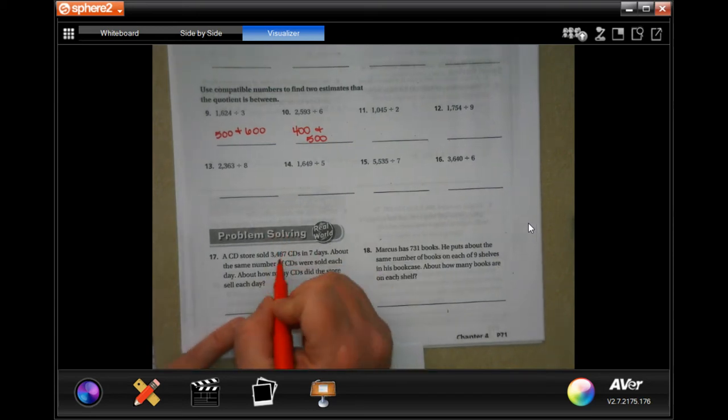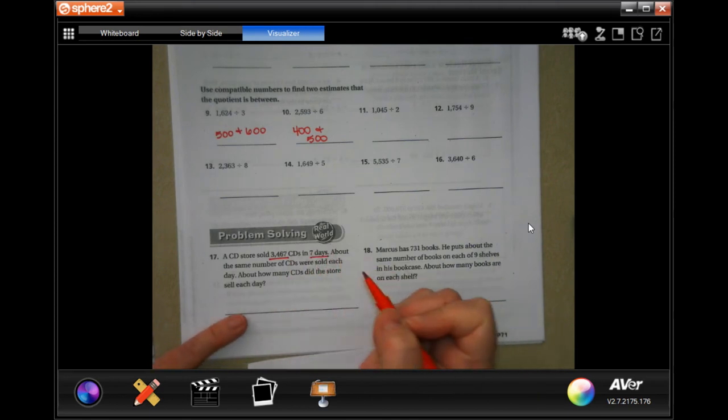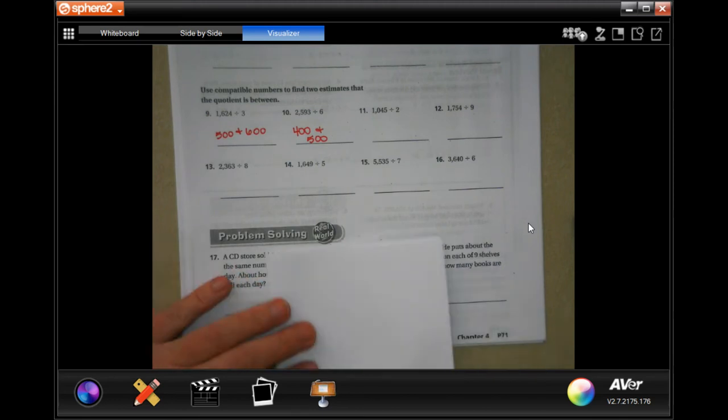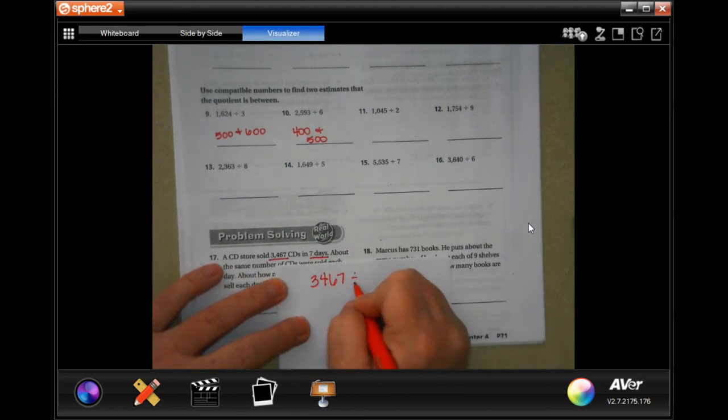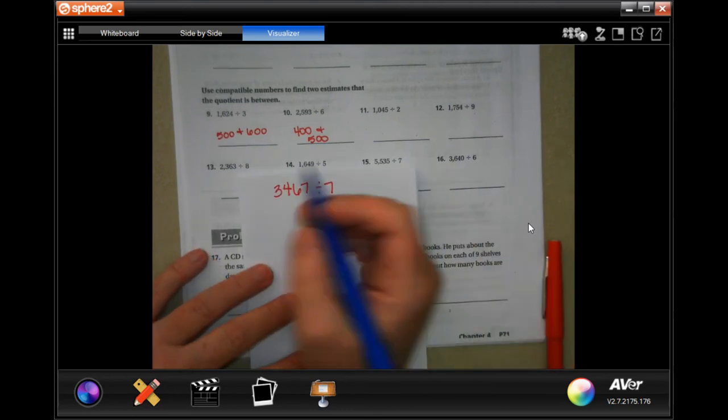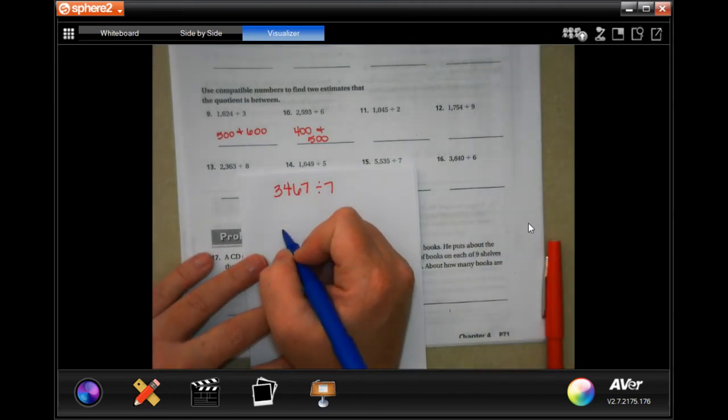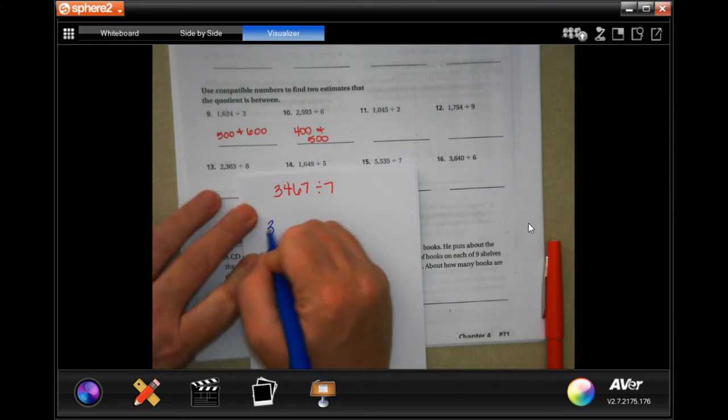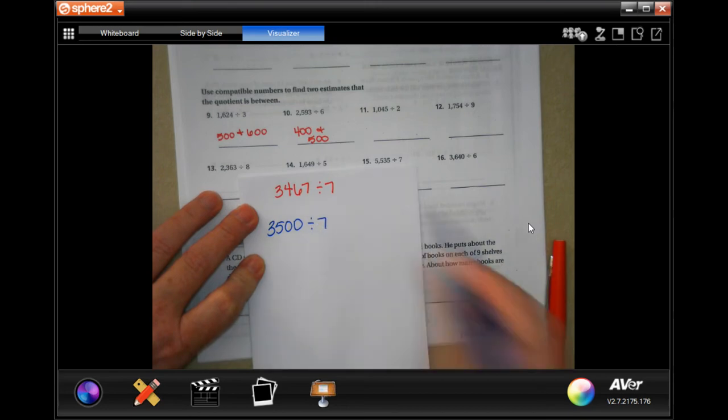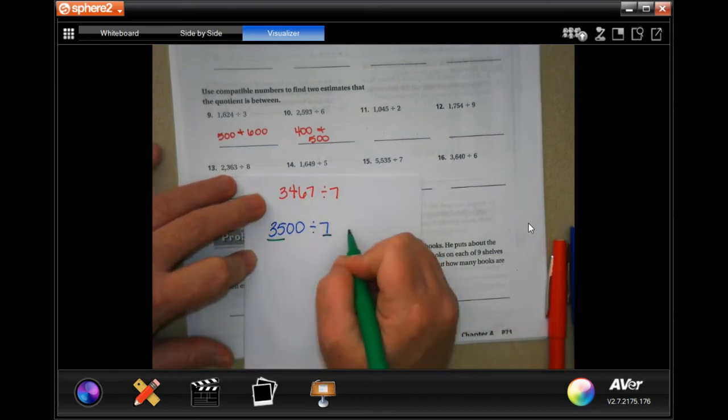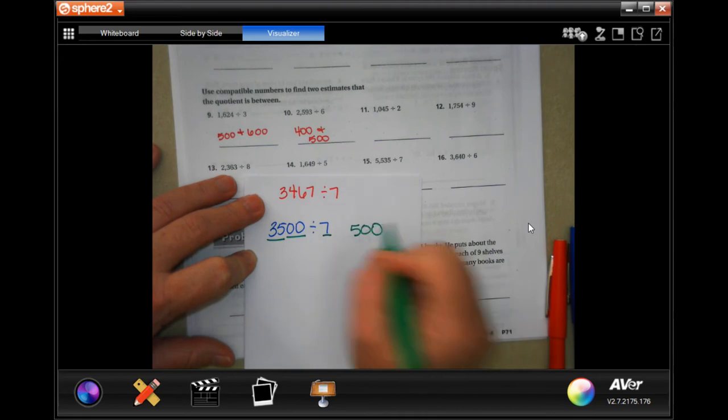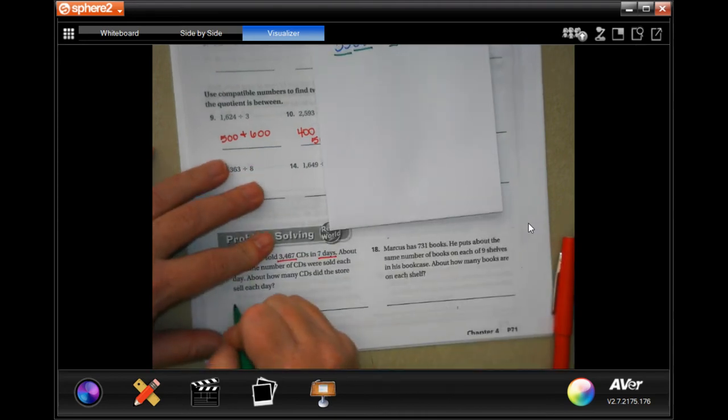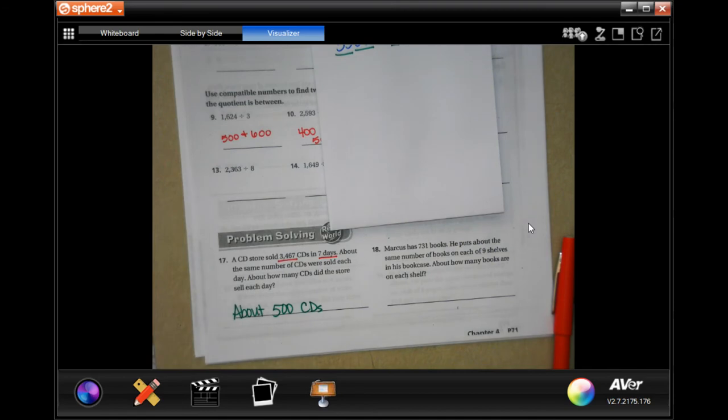Number 17 says a store sold 3,467 CDs in seven days. About the same number of CDs were sold each day, about how many CDs did the store sell each day? Well, when I do my multiples of seven, I could go to 28 or I could go to 35. Well, 35 is closer. So 7 goes into 35 five times with two zeros. So about 500 CDs.